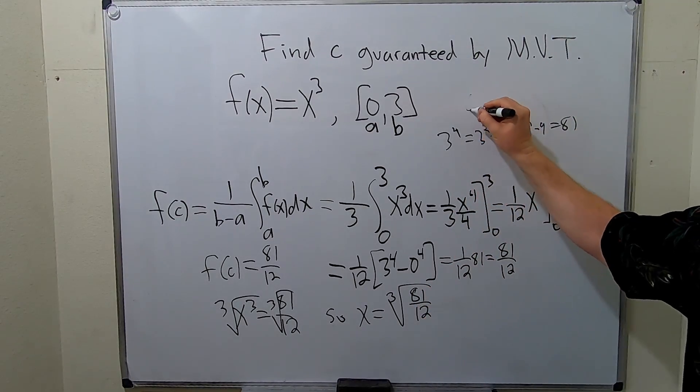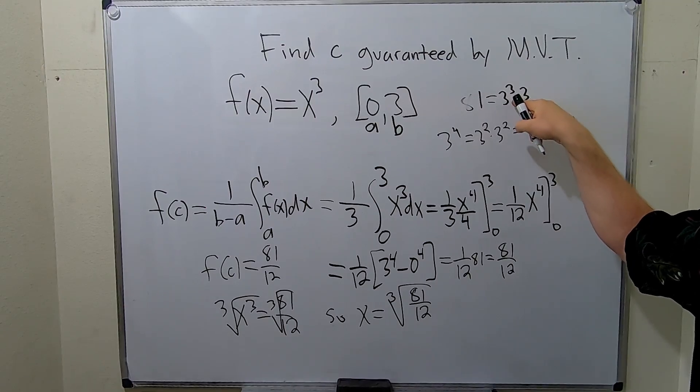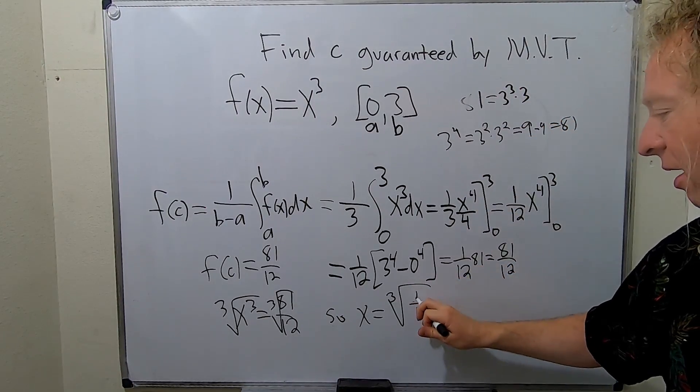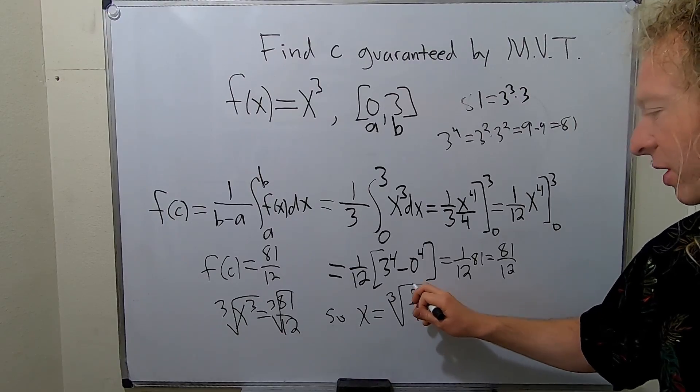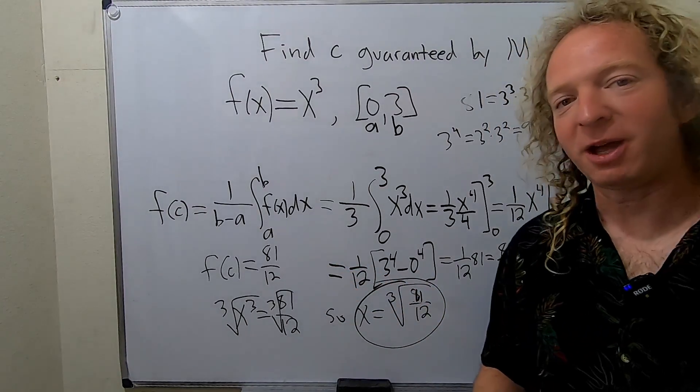And I guess you could work on simplifying this. Because you can write 81 as 3 cubed times 3. And then the cube root of 3 cubed is 3. But let's just leave it like this. Because that might be easier. And we can just finish. Because we're done. I hope this video has been helpful.